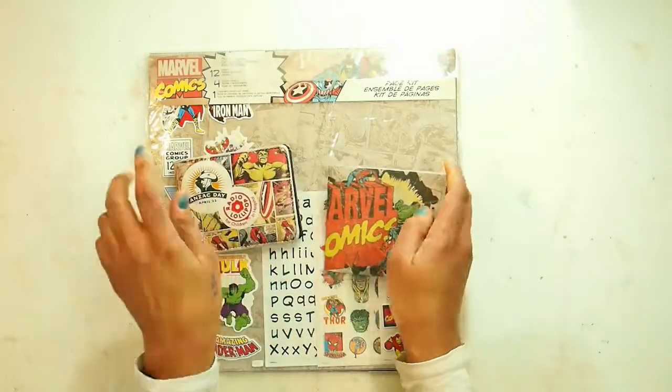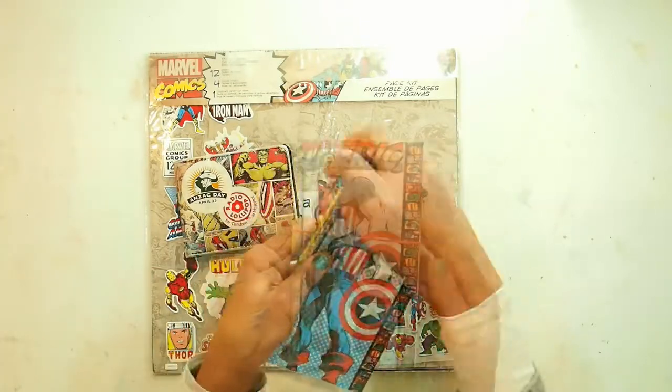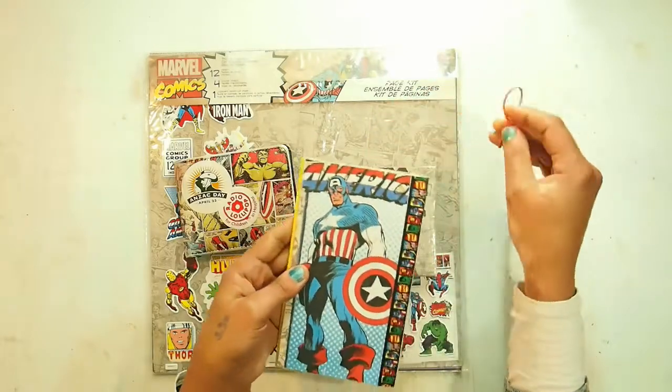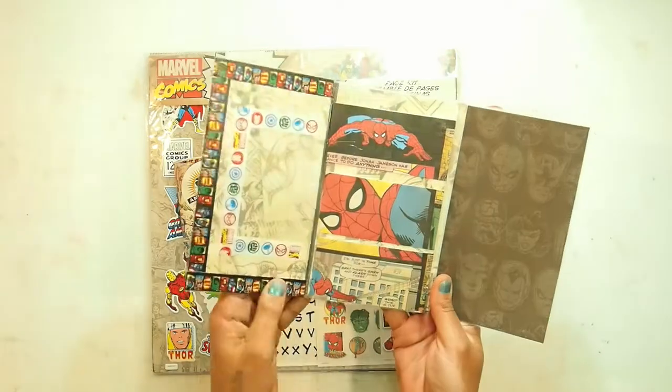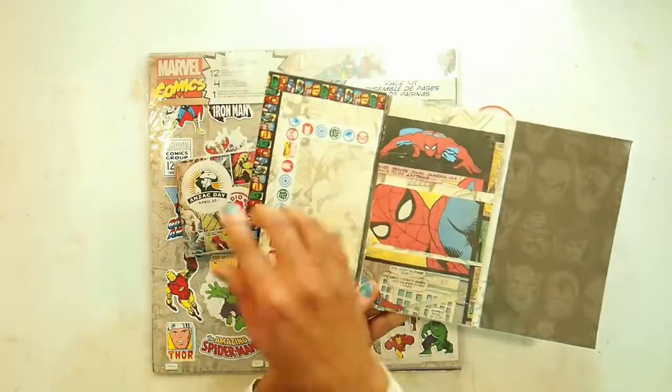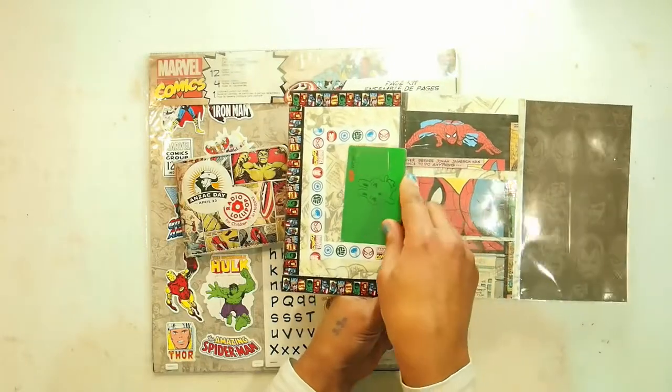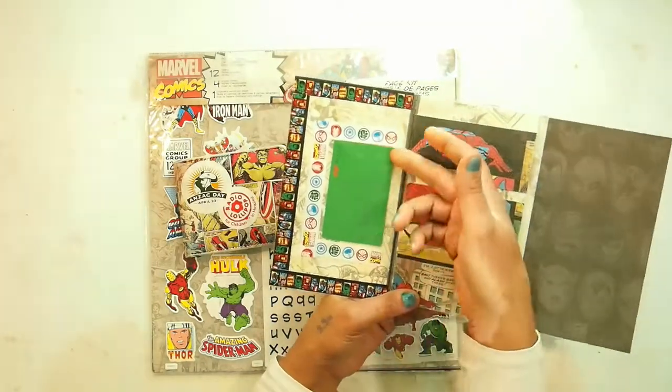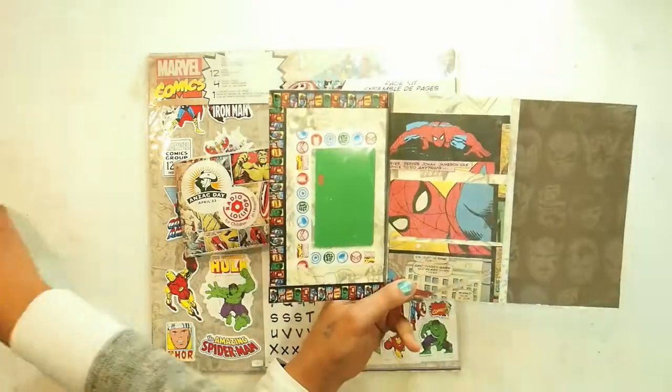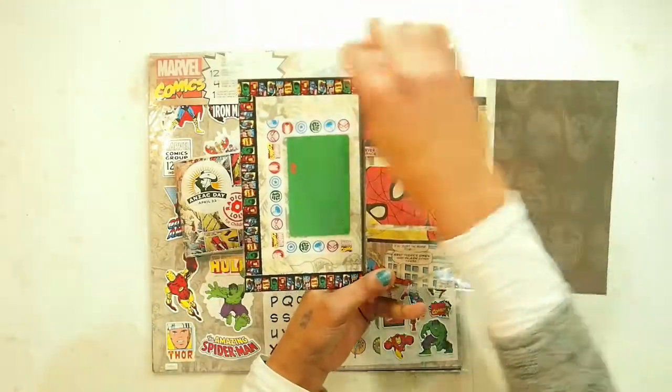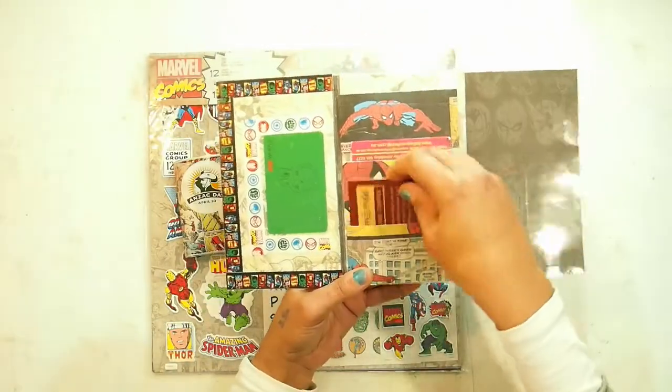I also then went one step further and created the clutch wallet for anyone who is so inclined, totally loving the superhero theme here. With this one you have an invisible area there so you can tuck your ID. I love this little addition here. Another pocket there and then you've got three sections here.